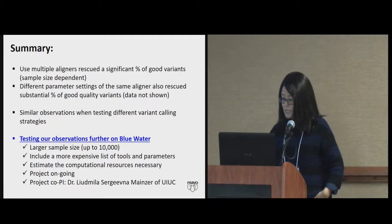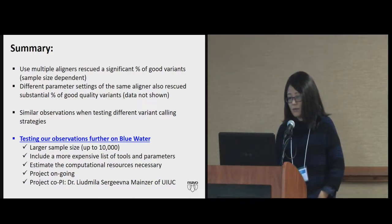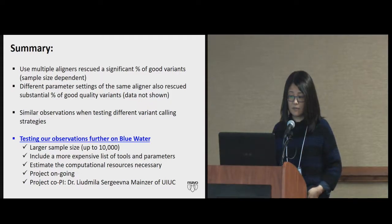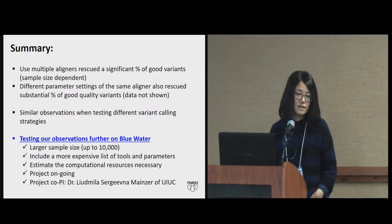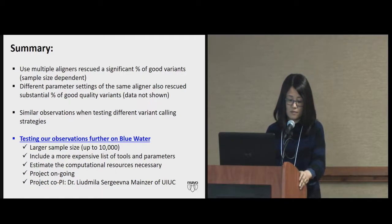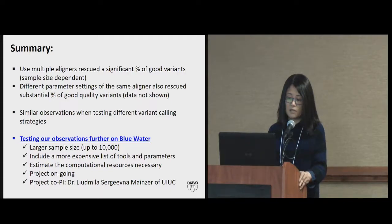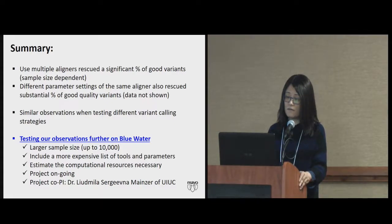To summarize: using multiple aligners rescued a significant percentage of good variants as sample size increased. We also tested other steps of the variant discovery workflow with similar observations. Basically, you need a comprehensive approach — multiple aligners, multiple parameter settings, and different strategies for genotype calling — to find those missing variants, which are the variants of interest.